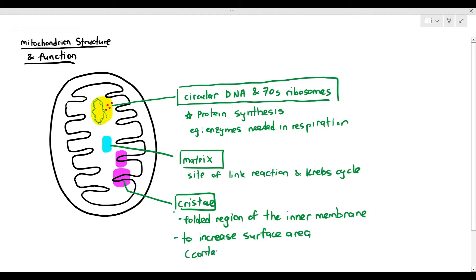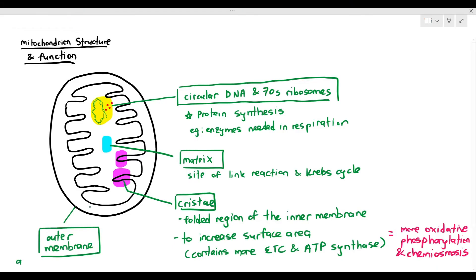When you have a folded region to form the cristae, the mitochondria is able to contain more electron transport chain and ATP synthase, because that's where the ETC and ATP synthase are located. So when you have more ETC and ATP synthase, the mitochondria can carry out more oxidative phosphorylation and chemiosmosis.